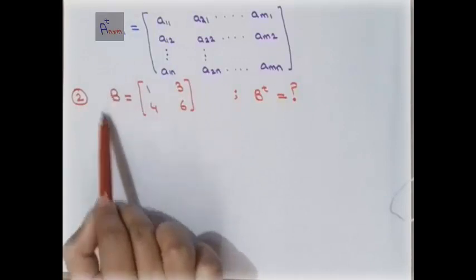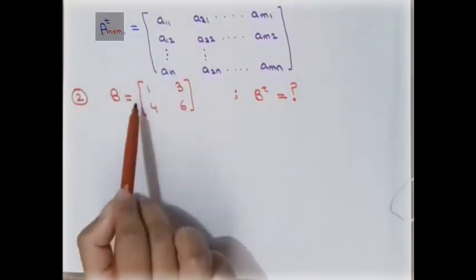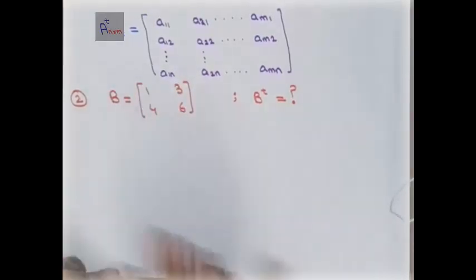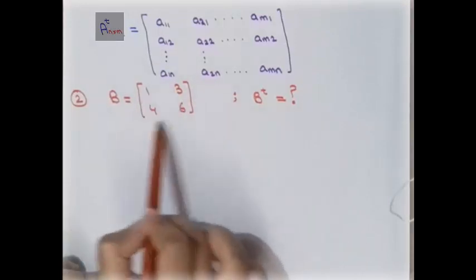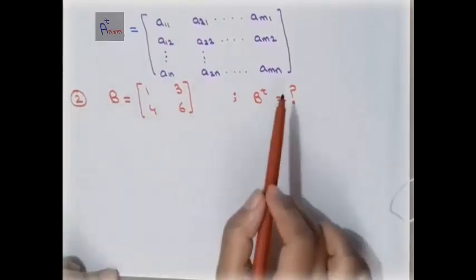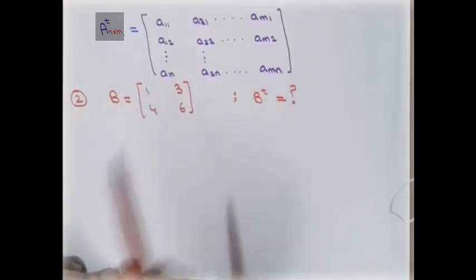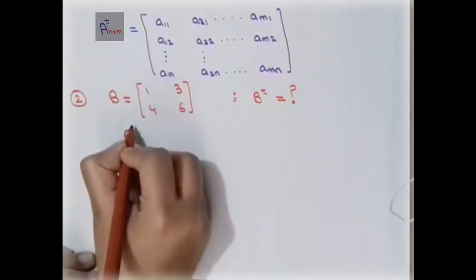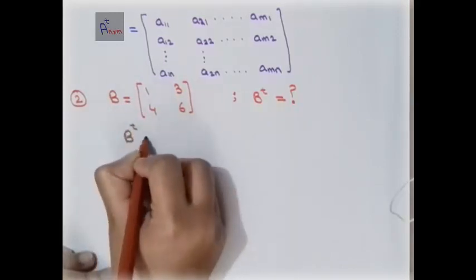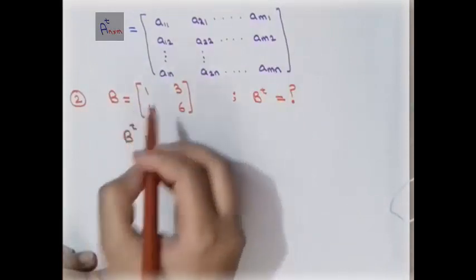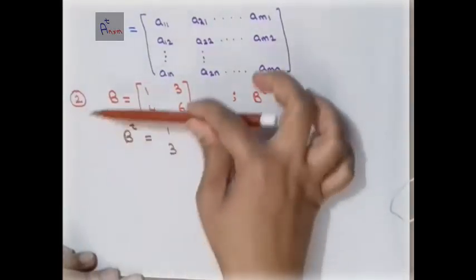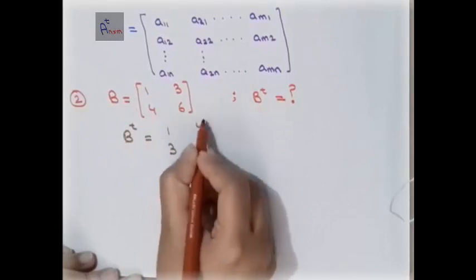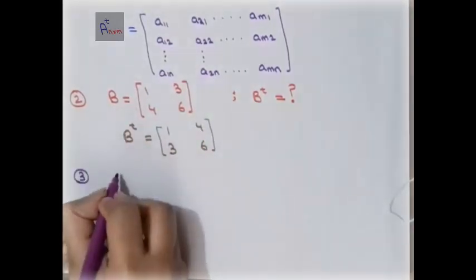Here is an example with matrix B, which is a 2 by 2 matrix with two rows and two columns. The transpose does not concern the order of the matrix — it just says to swap the rows and columns. To find the transpose B^T, all the rows become columns: the first row becomes the first column, and the second row becomes the second column, giving entries 1, 3 and 4, 6.